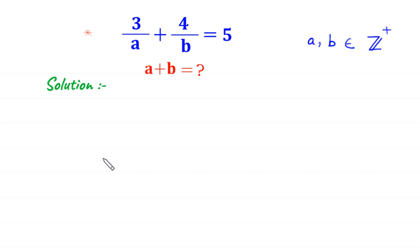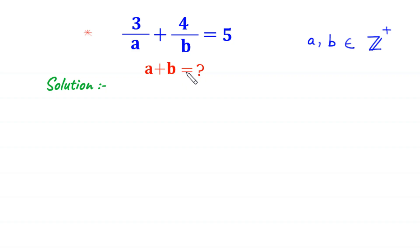Hello everyone, you are welcome to how to solve this very nice algebra equation. 3 over a plus 4 over b is equal to 5. Our job is to find all possible values of a plus b, such that a and b are positive integers.